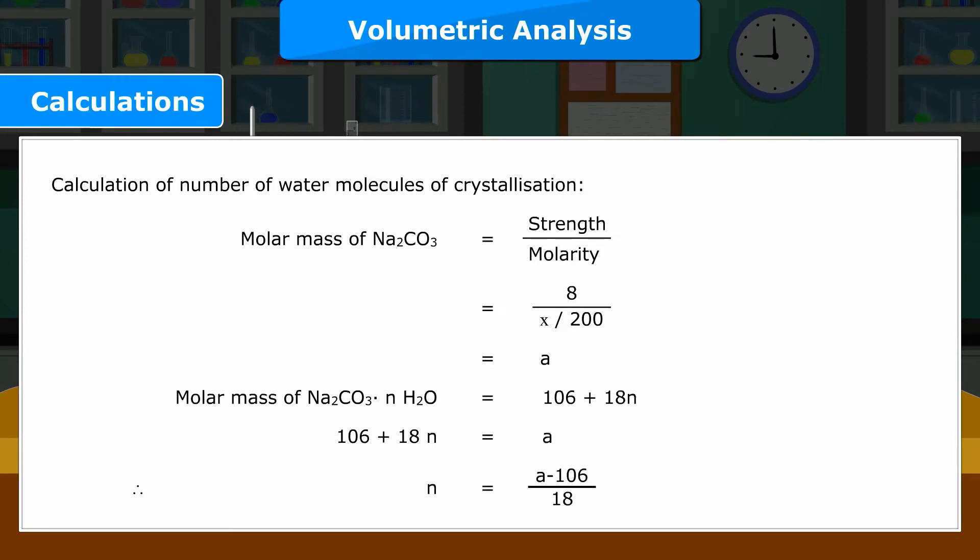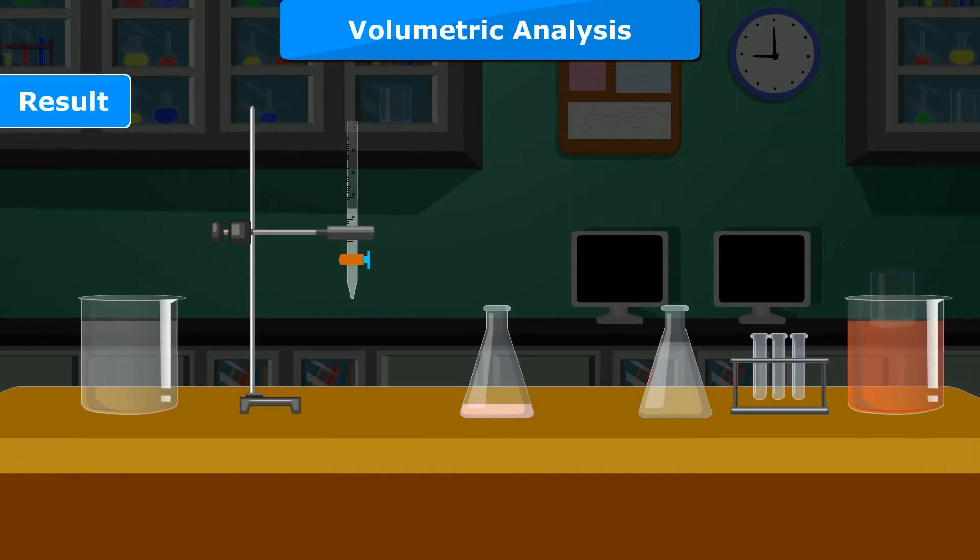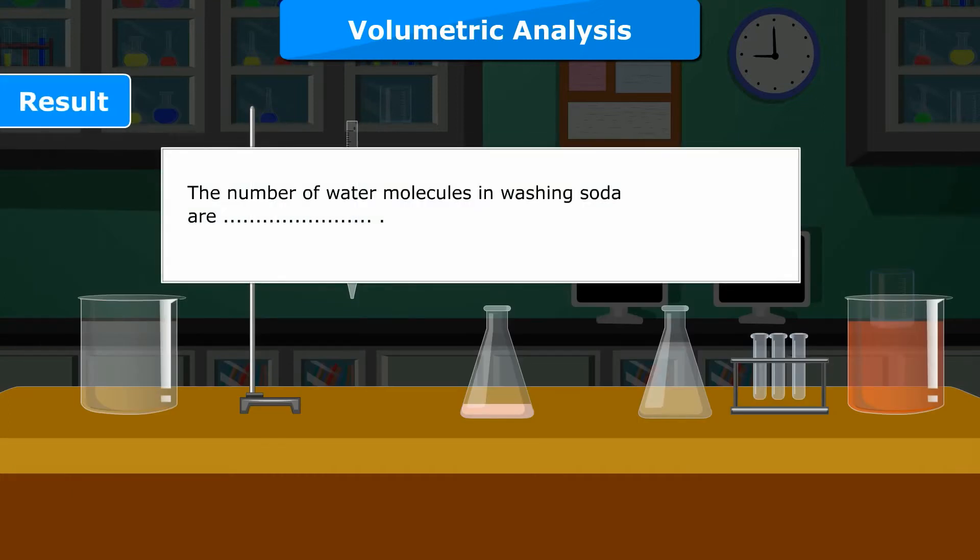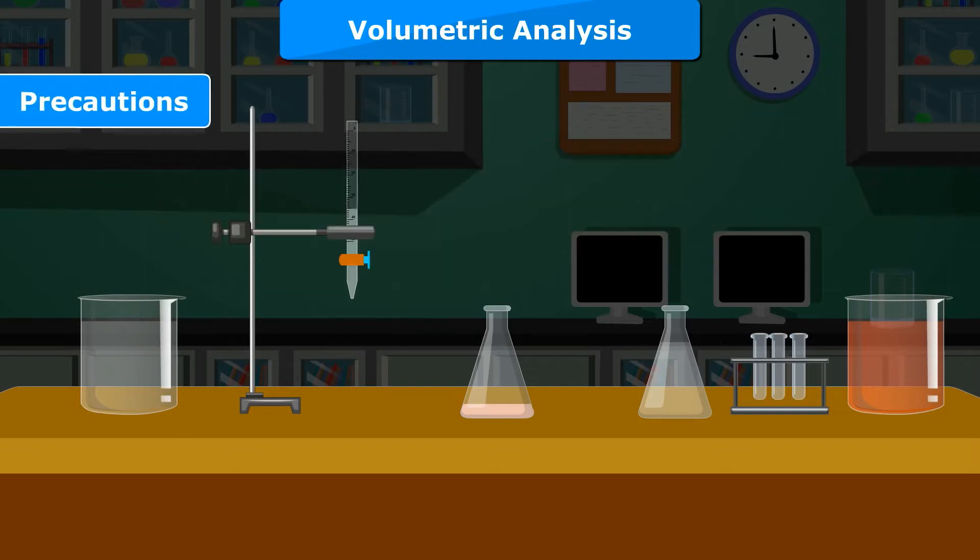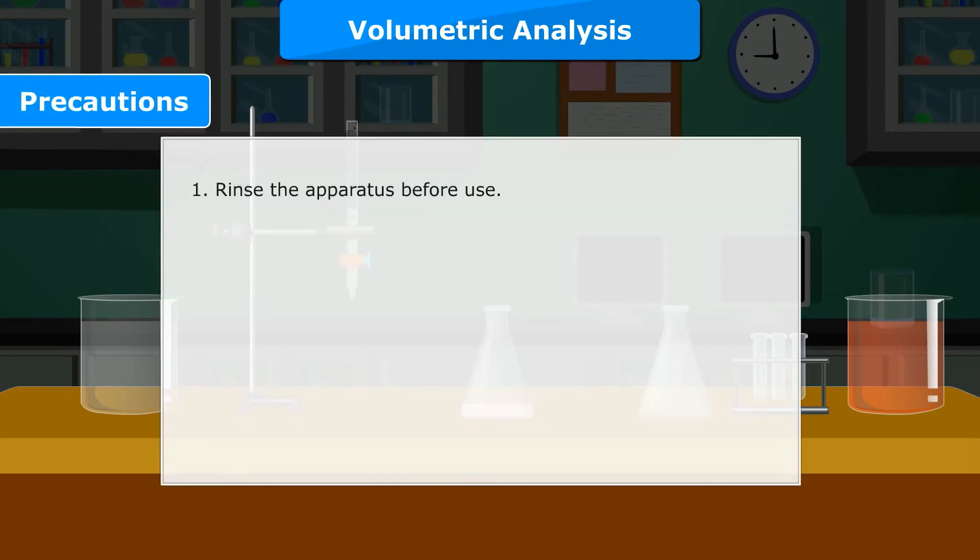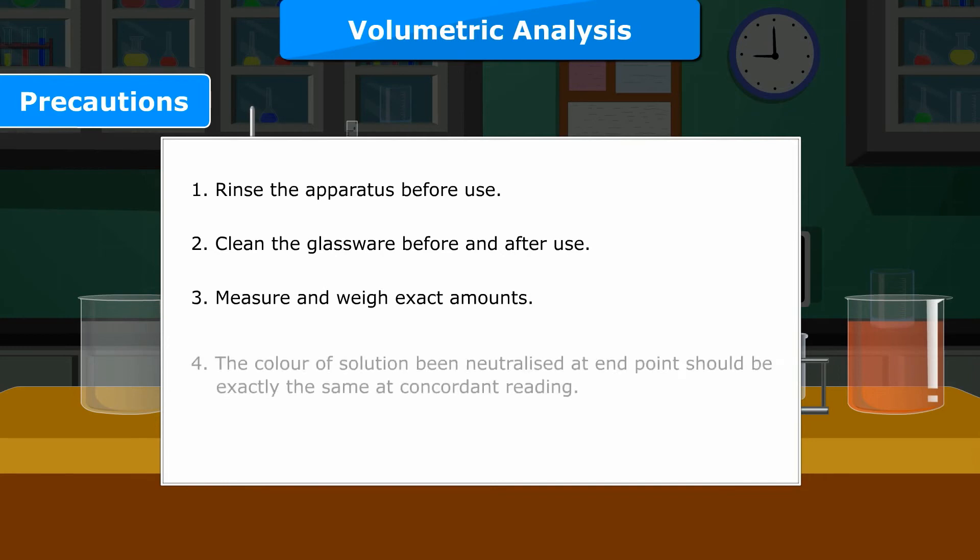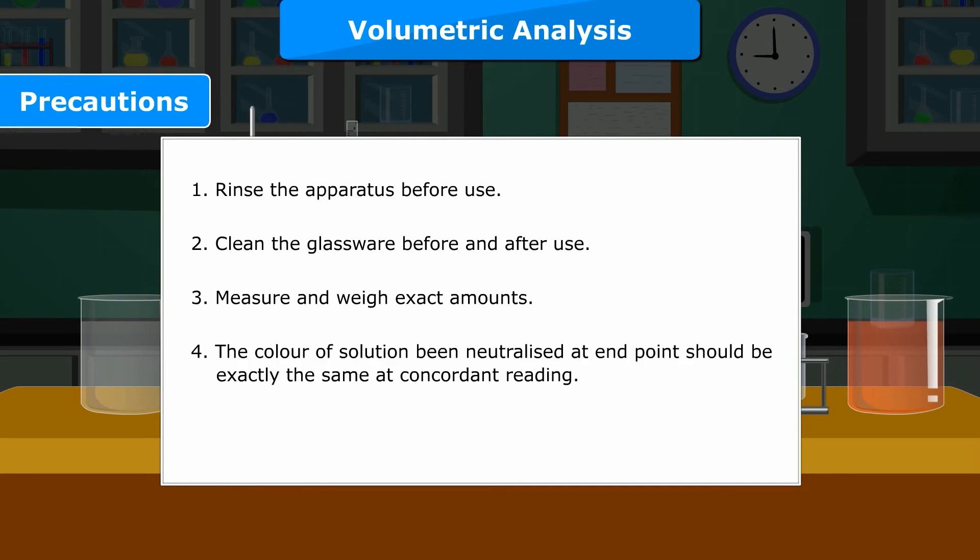Result: The number of water molecules in washing soda are [Dash]. Precautions: 1. Rinse the apparatus before use. 2. Clean the glassware before and after use. 3. Measure and weigh exact amounts. 4. The color of solution being neutralized at end point should be exactly the same at concordant reading.